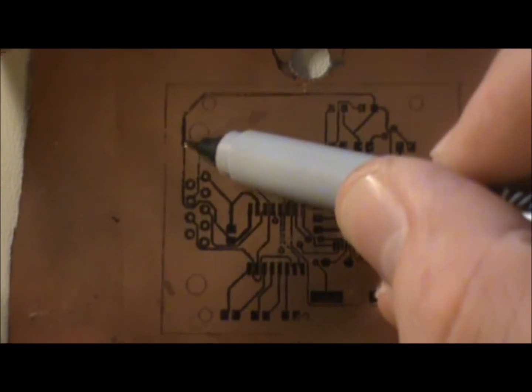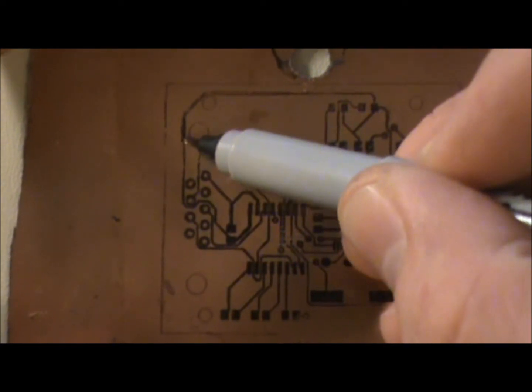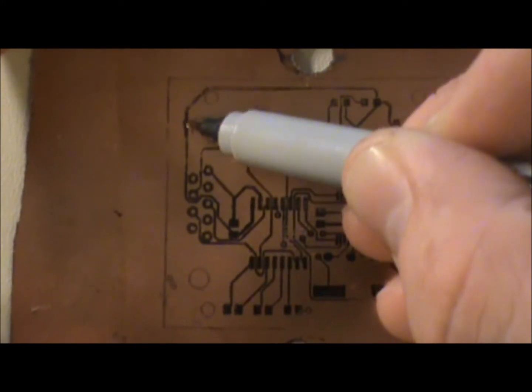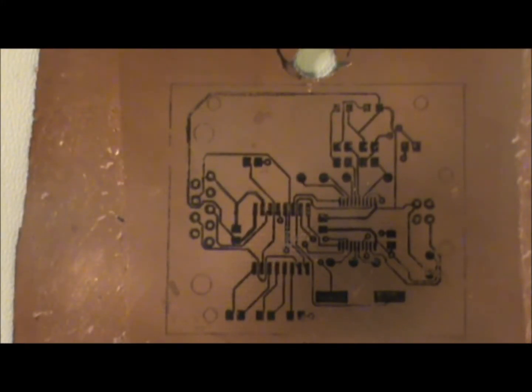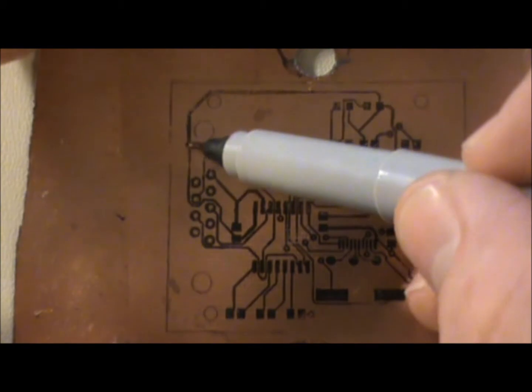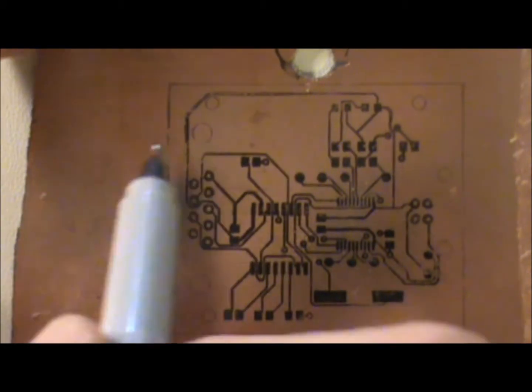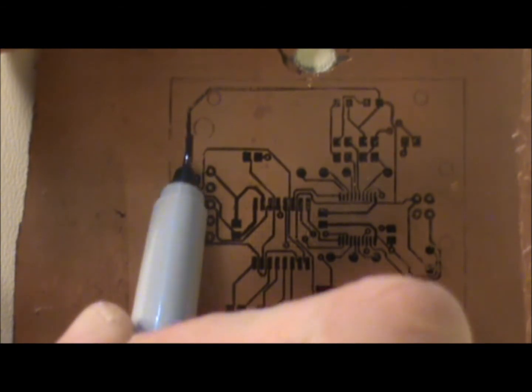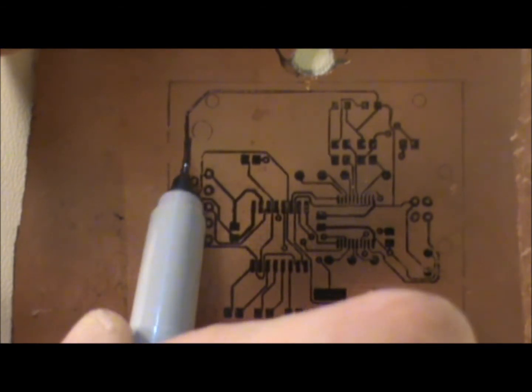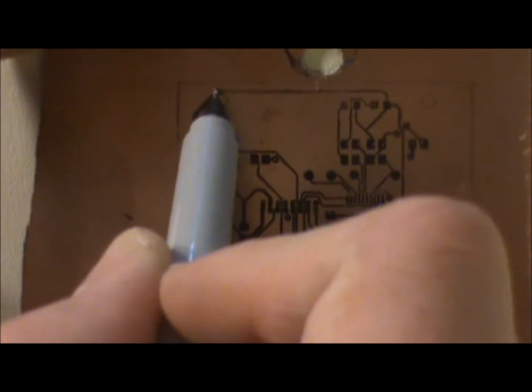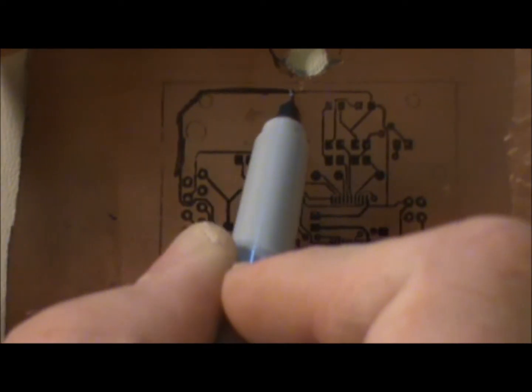Just take and kind of fill that trace in. You can get it this way, and then we'll fill that in. There we go. Might be a little fat, and like I said, this is prototype stuff, so it doesn't have to be perfect, right?